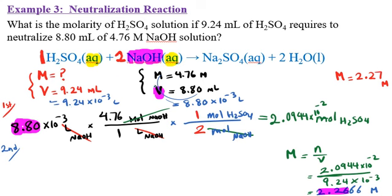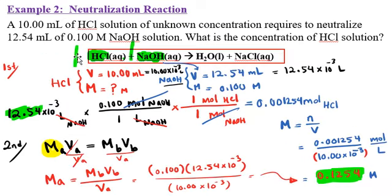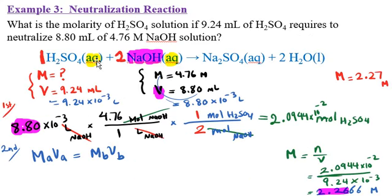Calculating that gives 2.266 M. I started with three significant figures, so the final answer is rounded to three sig figs: 2.27 M. This is the first method using conversion factors. For the second method, you can break it into three steps: multiply molarity times volume, convert moles using the mole ratio, then use the molarity equation. The result is the same.